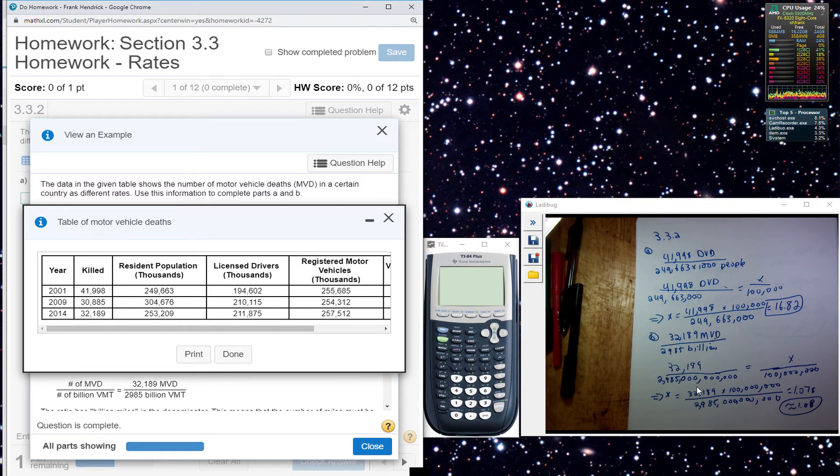And that billion, I changed the numbers. And they want the number of deaths per vehicle miles traveled. So I set up a proportion and I cross multiply and divide.